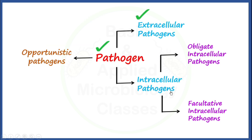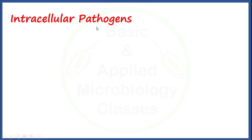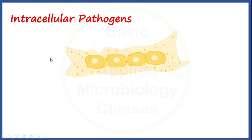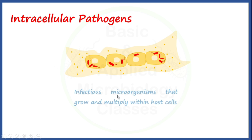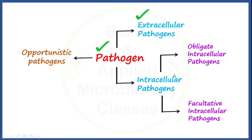Now we are going to talk about intracellular pathogens. Intracellular pathogens are just opposite to the extracellular — these are pathogenic microorganisms which grow and multiply inside the host cell. Infectious microorganisms that grow and multiply within the host cells are called intracellular pathogens. Intracellular pathogens are further of two types: obligate intracellular and facultative intracellular.